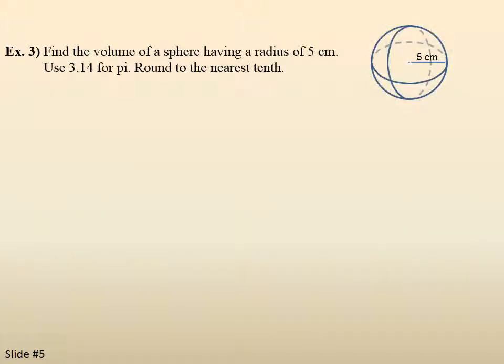Example 3. Find the volume of a sphere having a radius of 5 centimeters. Use 3.14 for pi. Round to the nearest tenth. You can see we have a sphere, a ball. Write the general formula. Well, the volume of a sphere is 4 thirds pi r cubed.